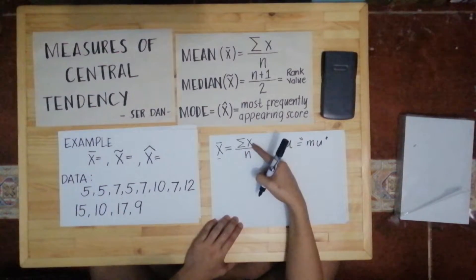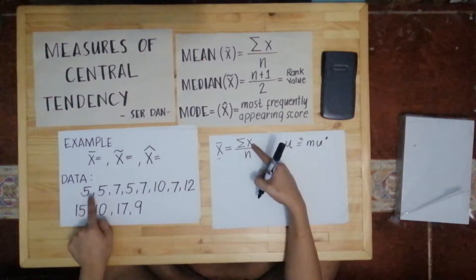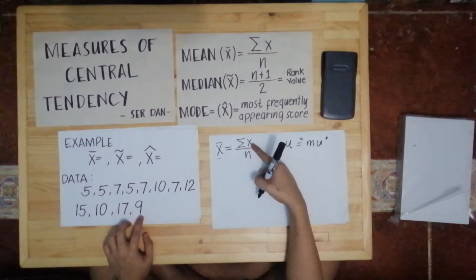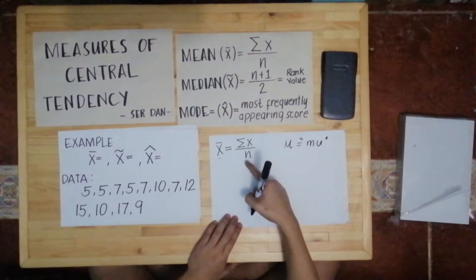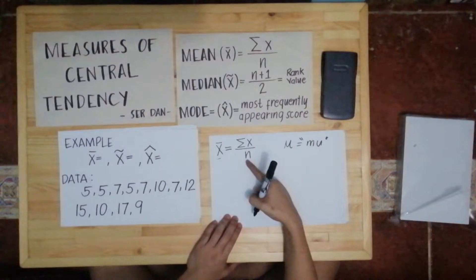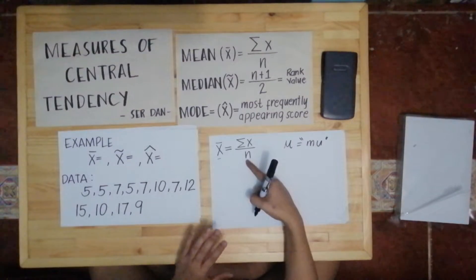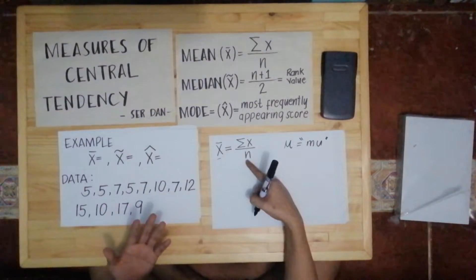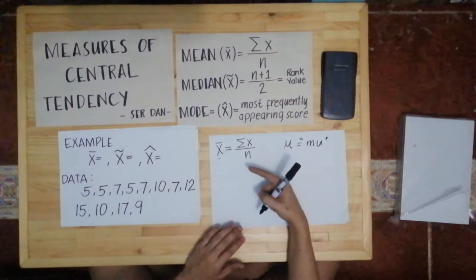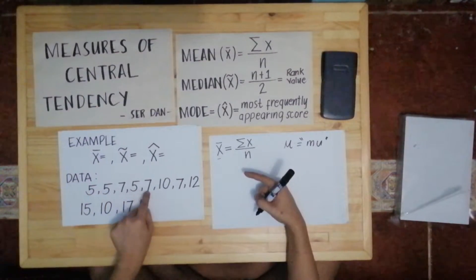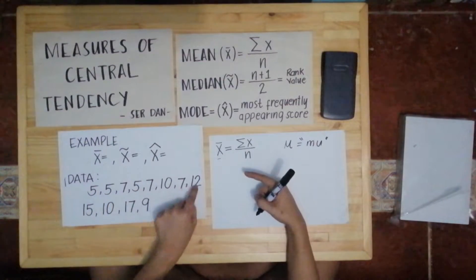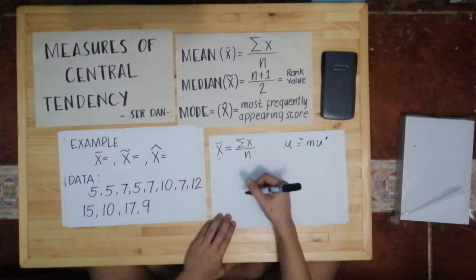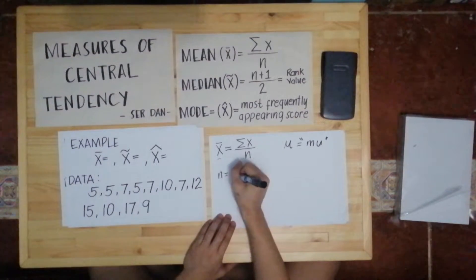Sample mean equals summation of x all over n. When we say x, these are the scores — the 5, 5, 7, 5, and so on. And n is the number of scores — different from the total of the scores. Counting our data: 1 through 12, so n equals 12.